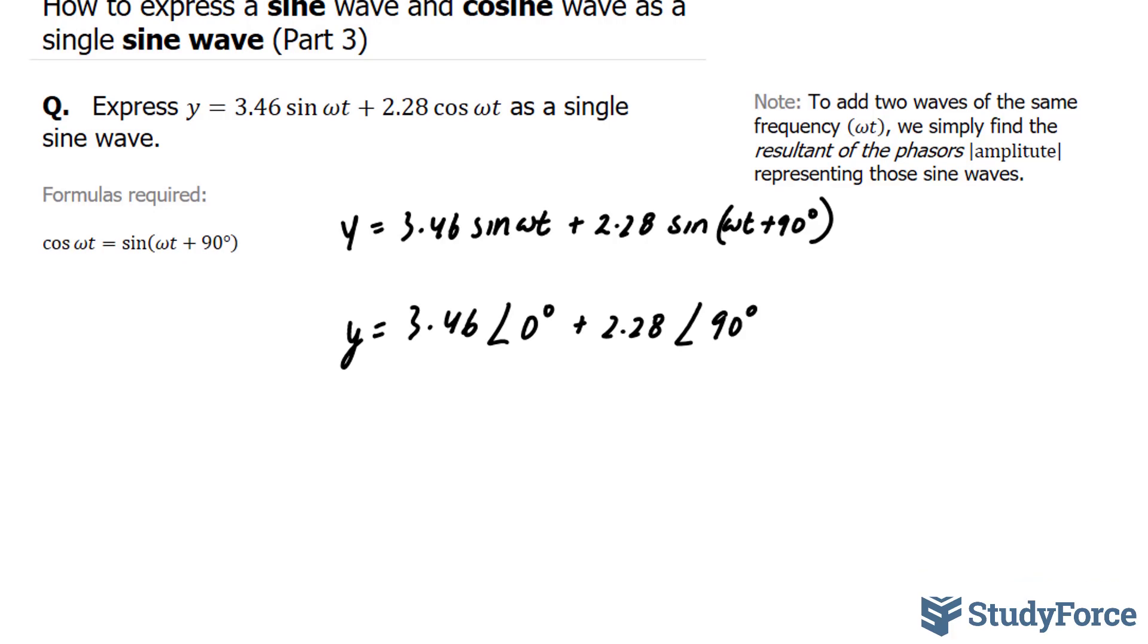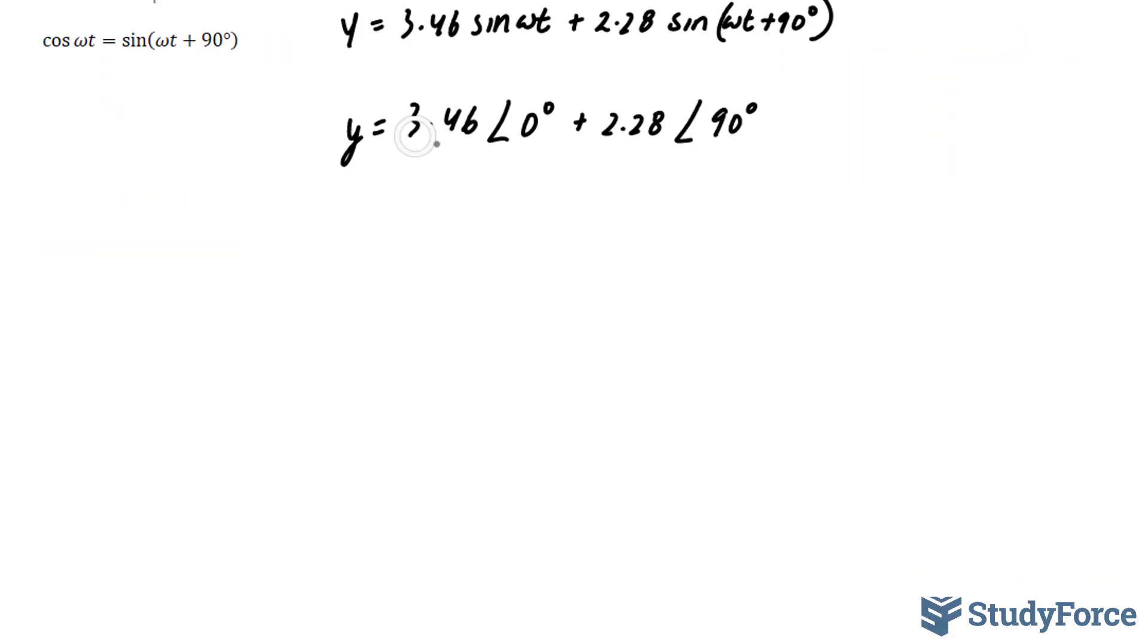Now what we have to do is add these two vectors. We have to treat these as vectors. To do this, I'll draw out these two vectors on an x and y plane. This vector will be shown in blue and this will be shown in black.